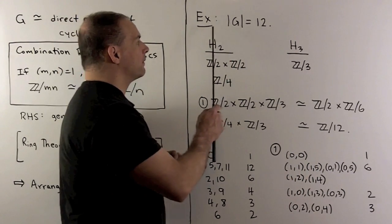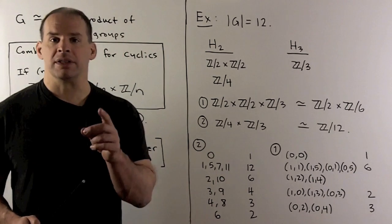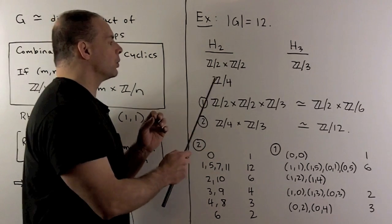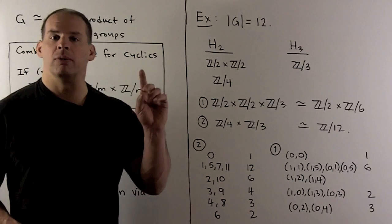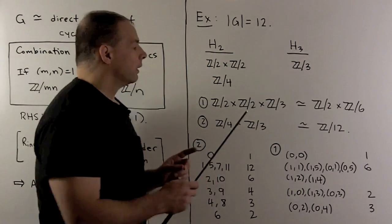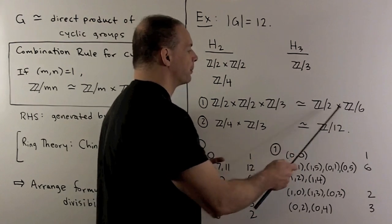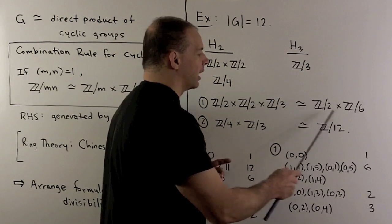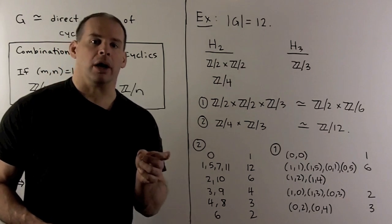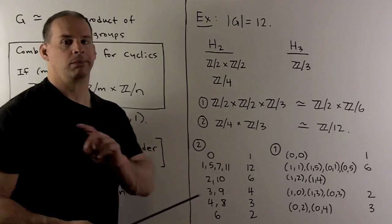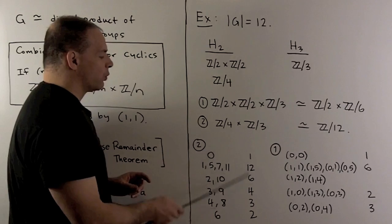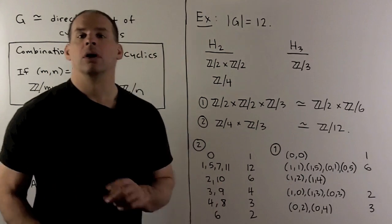For an example, let's suppose we have finite abelian groups with order 12. If we look at the Sylow subgroups, the Sylow 2-subgroups have order 4, so they can be either Z₂ × Z₂ or Z₄. For the Sylow 3-subgroup, we have only one possibility: Z₃. Putting these together and using the combination rule, we can take Z₃ and combine it with one of the Z₂'s to get Z₂ × Z₆, or combine Z₄ with Z₃ to get Z₁₂. We have our groups in the form given in the theorem. We can also apply the corollary by checking orders of elements in each of these groups. These can't be isomorphic because Z₁₂ has an element of order 12 and Z₂ × Z₆ doesn't. The list of orders of elements do not match up, so the corollary holds in this case.